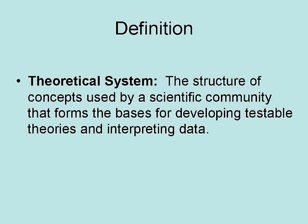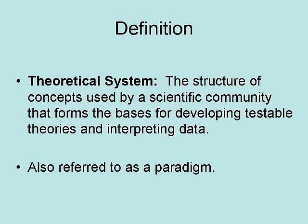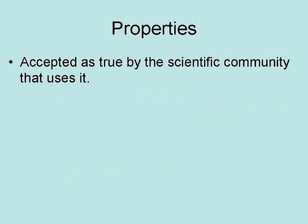A theoretical system is the structure of concepts used by a scientific community that forms the basis for developing testable theories and interpreting data. It is also referred to as a paradigm. A theoretical system is accepted as true by the scientific community that uses it.